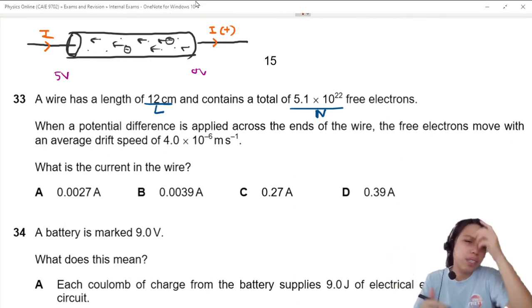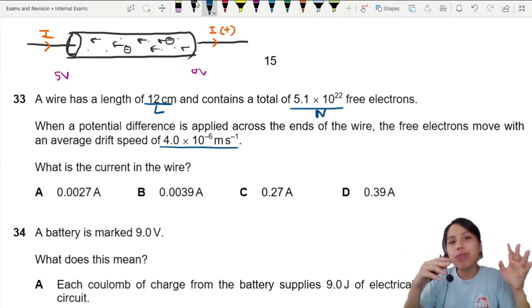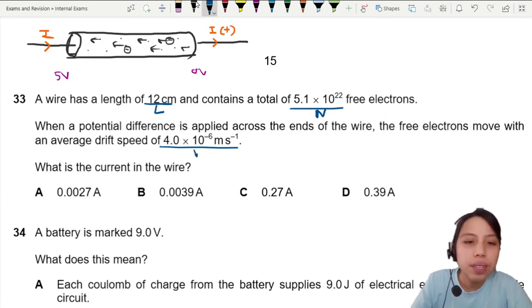But that's not important here. Let's continue. Drift speed is given to us, so on average all of them inside are drifting to the left. That's v. What is the current in the wire?